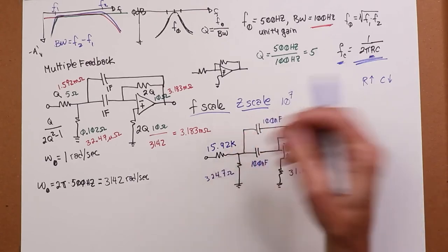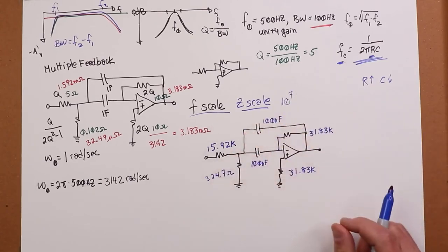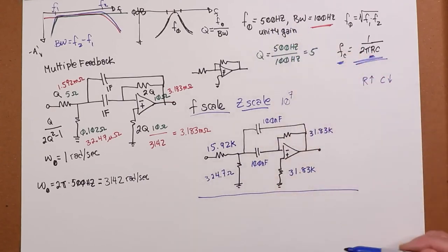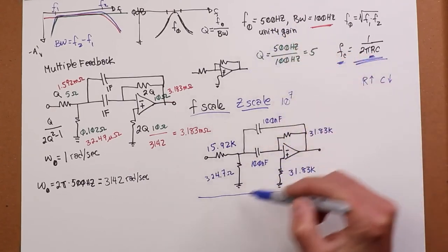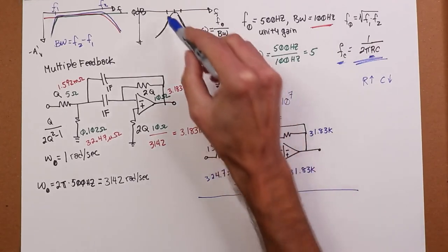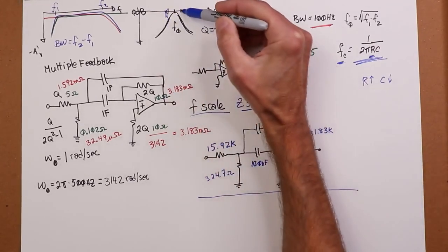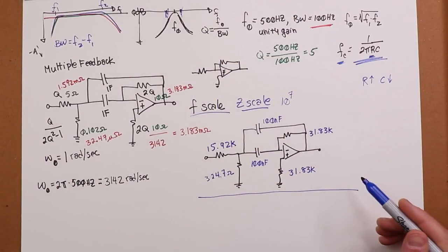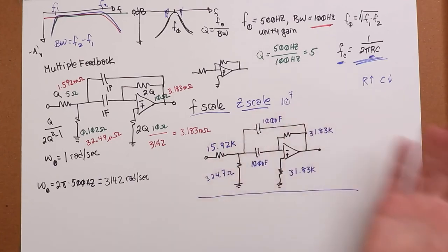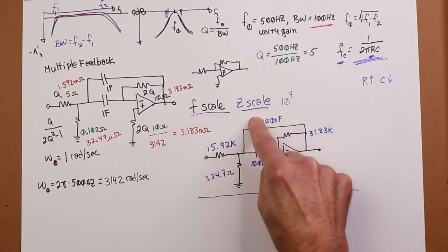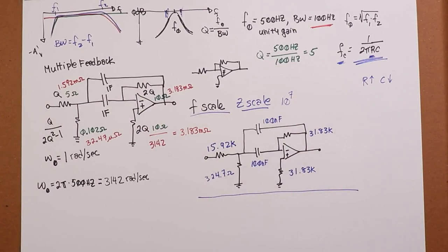So, again, you're going to have to find close standard values. You might have to tweak these things a little bit. But there's our completed design. We have ourselves a 500 hertz unity gain bandpass filter with a Q of 5, in other words, bandwidth of 100 hertz. So, roughly an F1 of 450, an F2 of about 550. Slightly skewed up, but a good approximation. If you needed a Q of 10 or 15 or 20, you would go to a state variable filter. A little bit more complicated, but it's still the same idea. You come up with a template, plug the values in, do your F scale, do your Z scale. There you go.